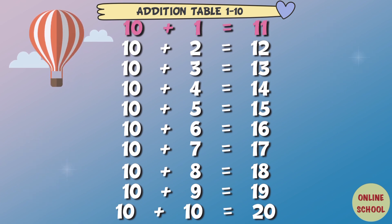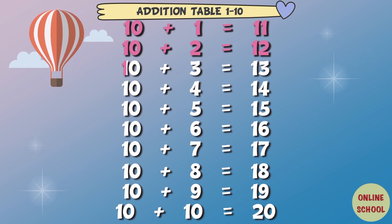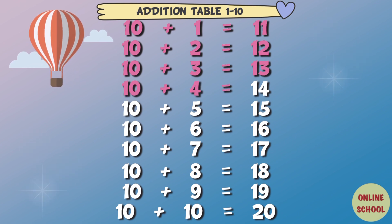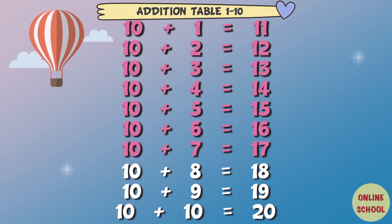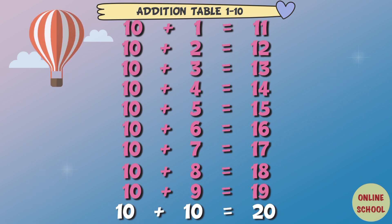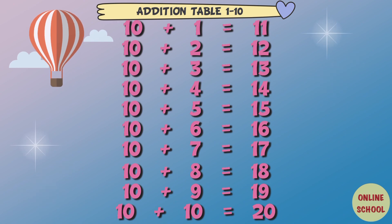Table 10: 10 plus 1 equal 11, 10 plus 2 equal 12, 10 plus 3 equals 13, 10 plus 4 equal 14, 10 plus 5 equal 15, 10 plus 6 equal 16, 10 plus 7 equal 17, 10 plus 8 equal 18, 10 plus 9 equal 19, 10 plus 10 equal 20. Yay!